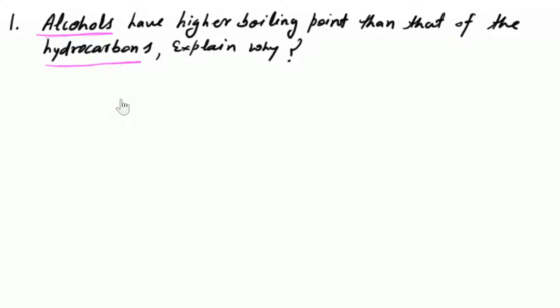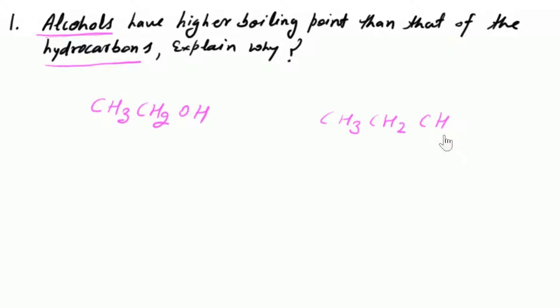इसको understand करने के लिए हम alcohol लेते हैं — suppose करो यह है ethanol — और इसके साथ hydrocarbons हमारे पास है। Comparable molecular masses को consider करना होता है, तो let the hydrocarbon be propane। जब comparable molecular masses में question पूछा हो तो size का use explanation में नहीं हो सकता, क्योंकि size equal होने से van der Waals forces भी उसी के according होंगी। तो फिर हमारे पास जो factors रह जाते हैं वो हैं hydrogen bonding और polarity।